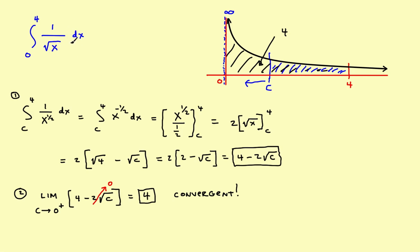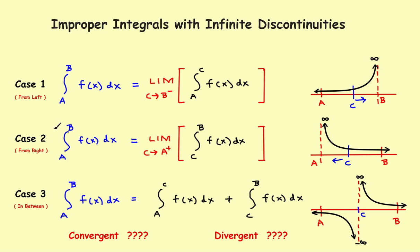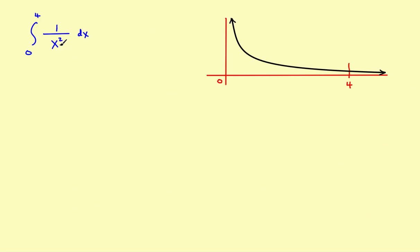Now we'll look at a similar problem that diverges. It's still a case 2 problem. The same limits from 0 to 4, but rather than 1 over the square root of x, suppose you have 1 over x squared. The graph looks similar but goes up a little steeper and comes down more quickly, but it's a similar looking graph.